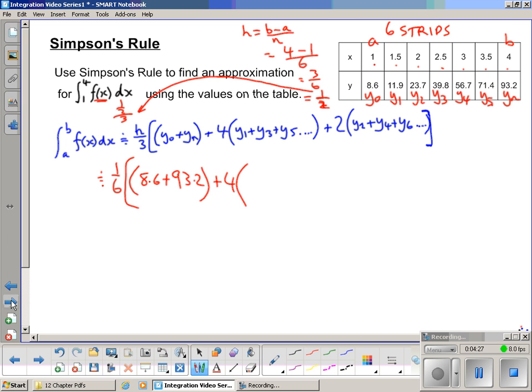Plus 4 lots of all our odd ones. Let's label that anyway: odds, evens. Our odd ones, which go in this 4 bracket here, 11.9. Our next odd one would be our y3, 39.8. We've got y5, 71.4. That's the end of our odds. Let's do our evens bracket now, in which we'll put y2, 23.7, and y4, which is 56.7. And a big square bracket at the end of it.